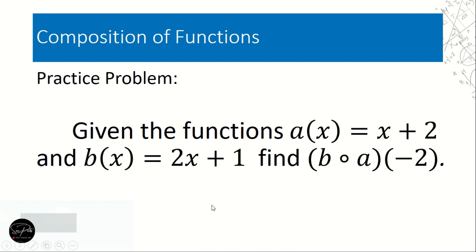That's it for part 2 of our lesson on composition of functions. Now we have a practice problem: given a of x equals x plus 2 and b of x equals x plus 1, find b composite a of negative 2. Write your answer in the comment box. Have a nice day!